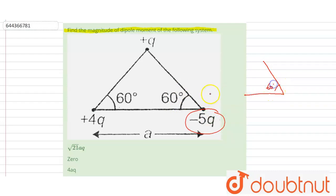This 60 degree angle is given and minus 5q charges can be written as minus 4q plus minus q here. This minus 4q will make a dipole with this plus 4q and here this minus q will make a dipole with this plus q charges.